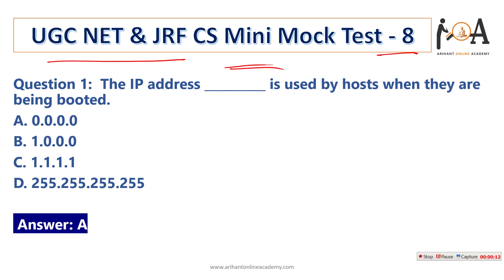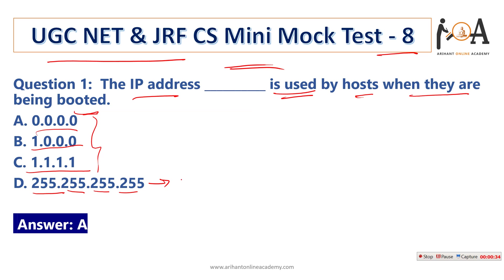Question number one: which of the following IP addresses is used by a host when it is being booted? The four options are 0.0.0.0, 1.0.0.0, 1.1.1.1, or 255.255.255.255. Option D, 255.255.255.255, is used as the limited broadcast address to send messages to all computers in a network. The correct answer is 0.0.0.0, which is the IP address used when a system is being booted. So option A is correct.